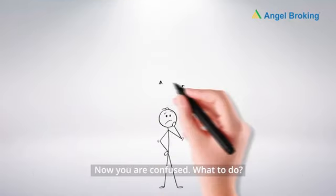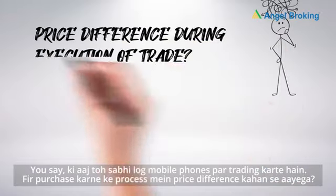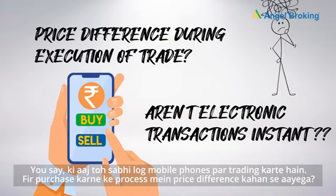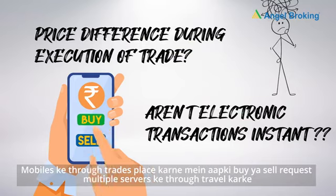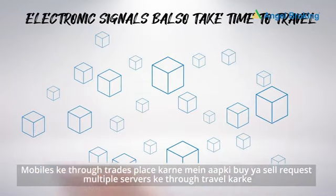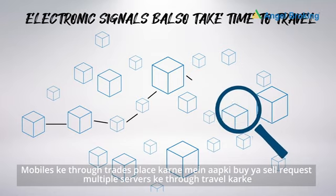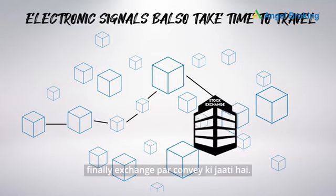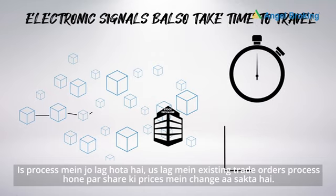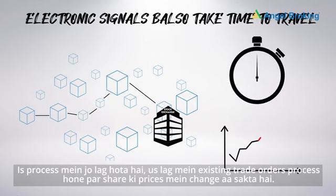Now you are confused — what to do? You wonder where the price difference comes from. The price difference occurs because your buy or sell request travels through multiple servers before finally being conveyed to the exchange. In this process, the lag that occurs can cause share prices to change as existing trade orders are processed.